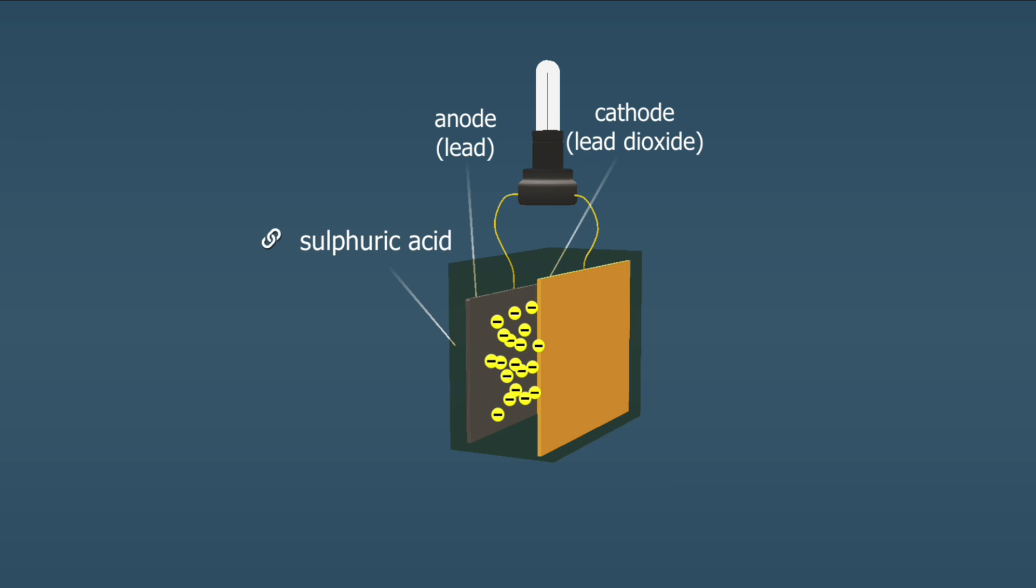When the battery is fully charged, these two electrodes are a positively charged lead-dioxide plate and a negatively charged lead plate. The electrolyte in the battery is the sulfuric acid solution.